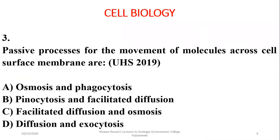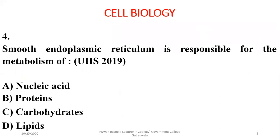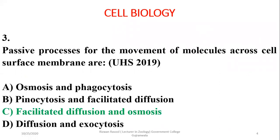Question 3: Passive processes for the movement of molecules across the cell surface membrane include facilitated diffusion and osmosis. Other processes such as phagocytosis, pinocytosis, or exocytosis are considered active events.